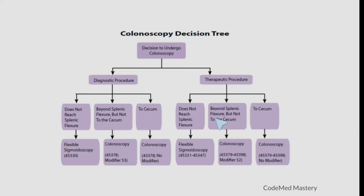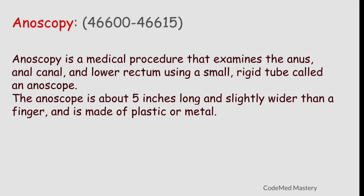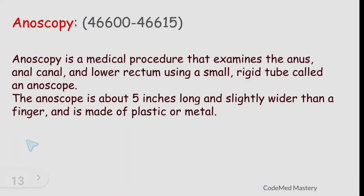Anoscopy has code range 46600 to 46615. It is a medical procedure that examines the anus, anal canal, and lower rectum using a small rigid tube called an anoscope, which is about five inches long and slightly wider than a finger, made of plastic or metal. Review the code range 46600 to 46615 along with the parenthetical notes below each code.